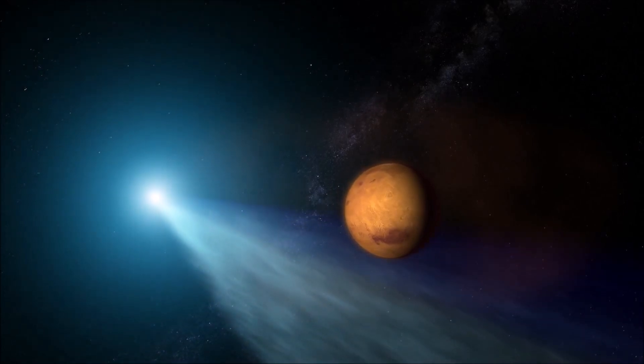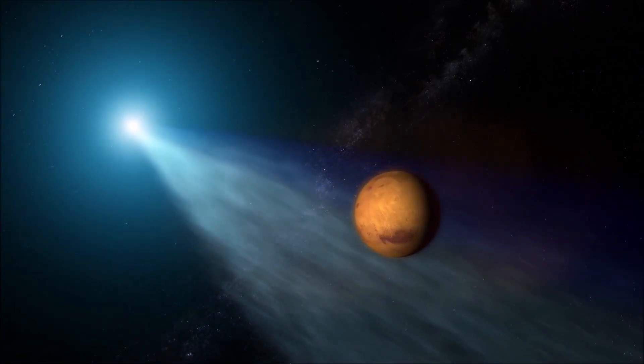Some comets, called hyperbolic comets, pass by only once and then exit the solar system.